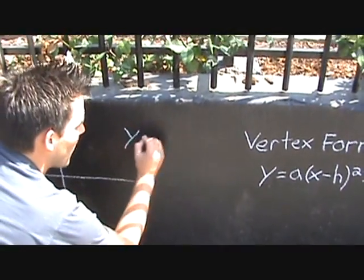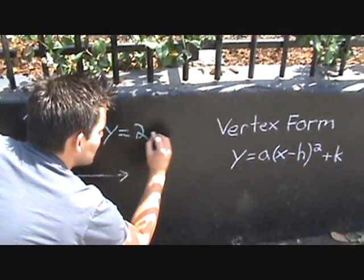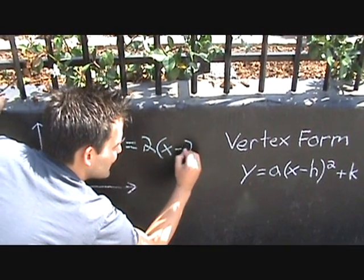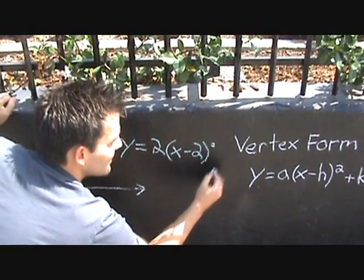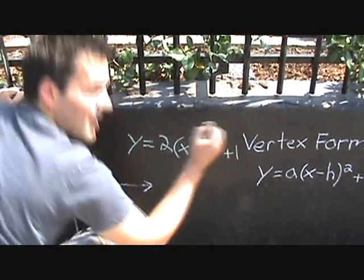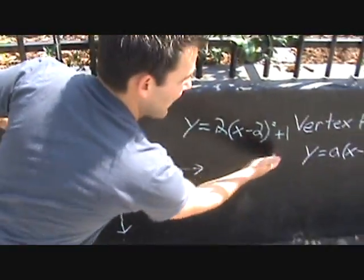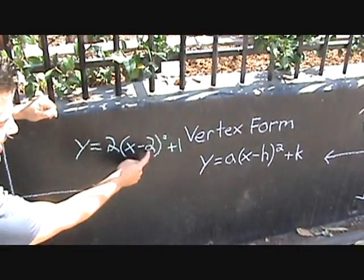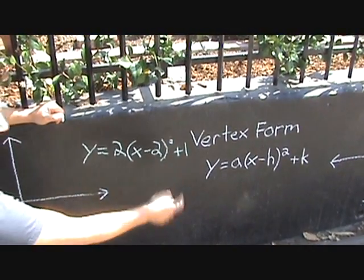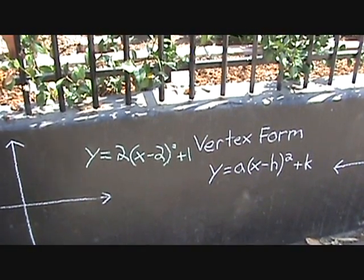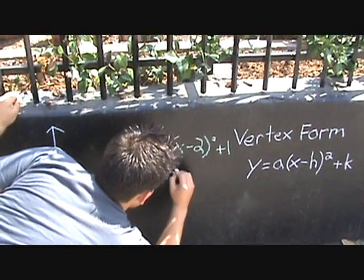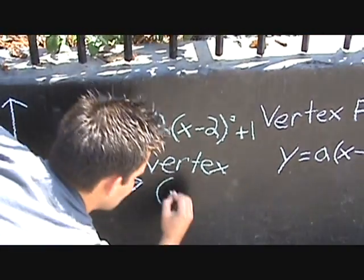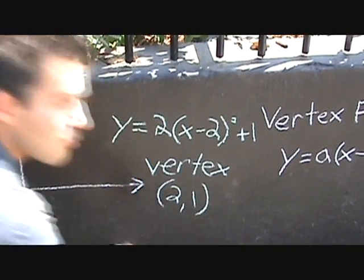How about y equals 2 times the quantity x minus 2 squared plus 1. Now right away by looking at this and comparing it to our vertex form, we see that h is 2 and k is 1. That means the vertex is at 2, 1.